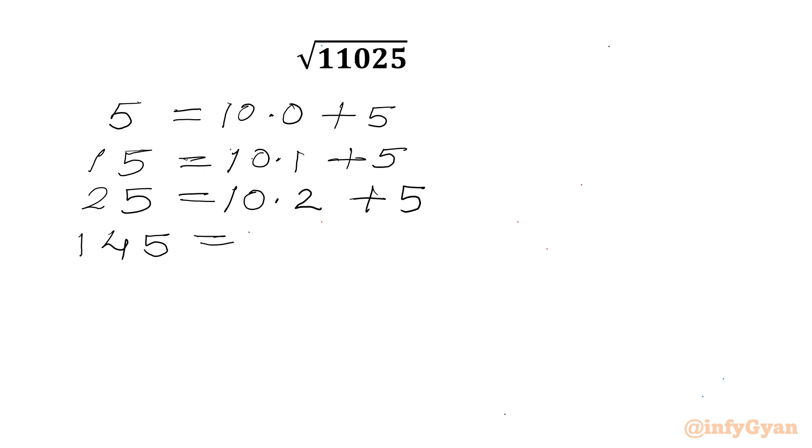And 145 we can write 10 times 14 plus 5, 140 plus 5, 145. Now we can generalize our form. So it will be 10n plus 5, where n is always positive.